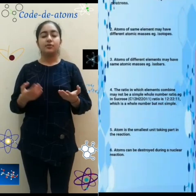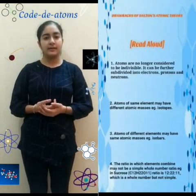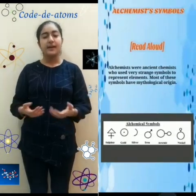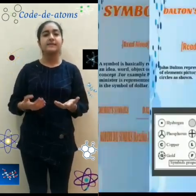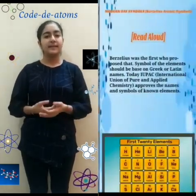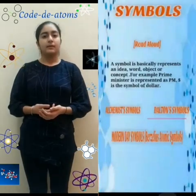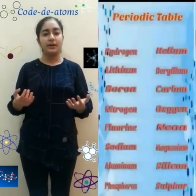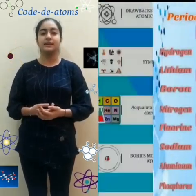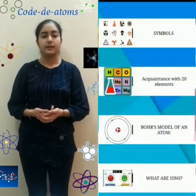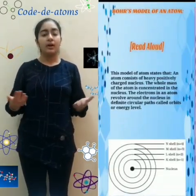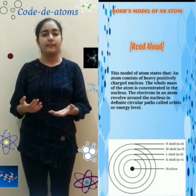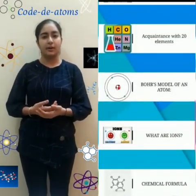It also has the drawbacks of Dalton's atomic theory in the succeeding slide. Symbols given by alchemists, Dalton, and Berzelius are also shown. Properties of the first 20 elements of the periodic table are also mentioned in the app. Bohr's model of an atom tells us about the K, L, M, N shells and their electronic configuration.